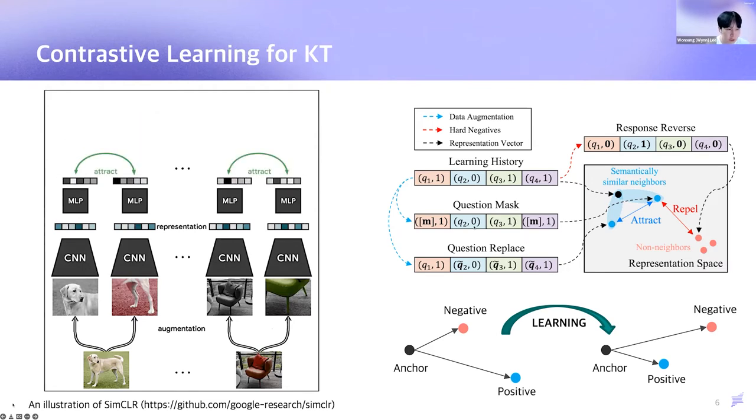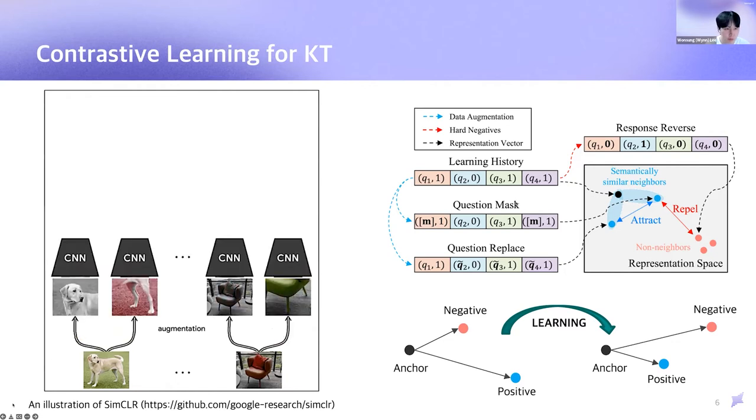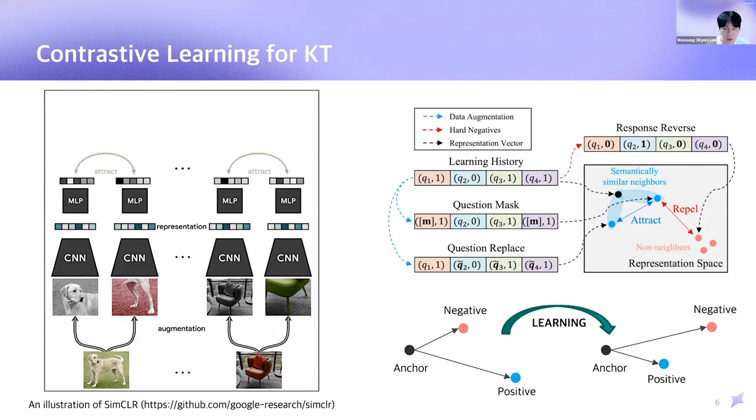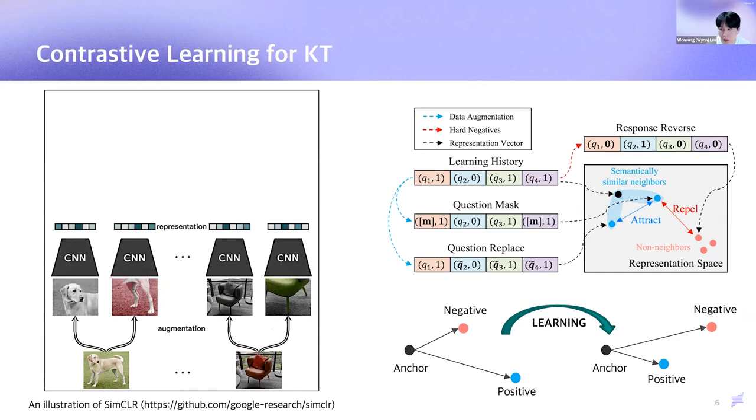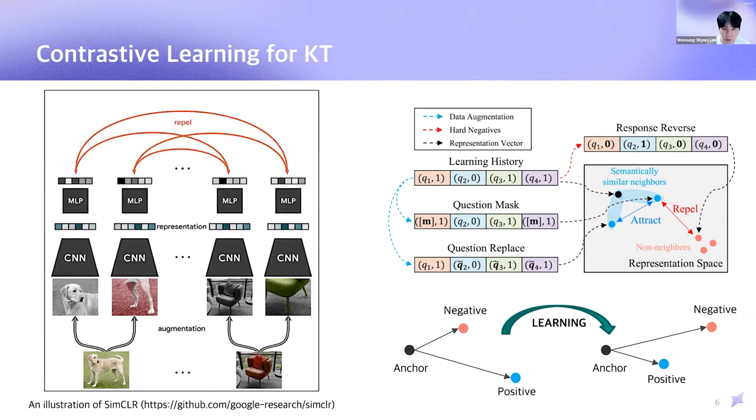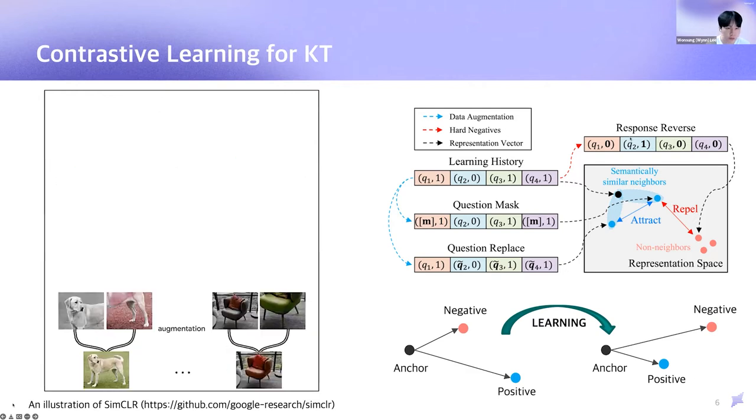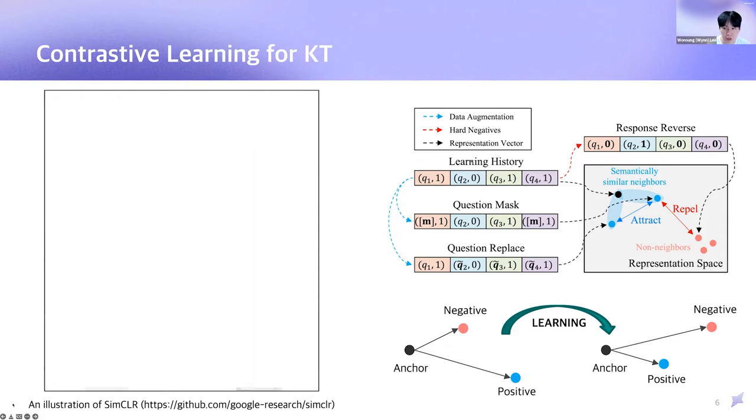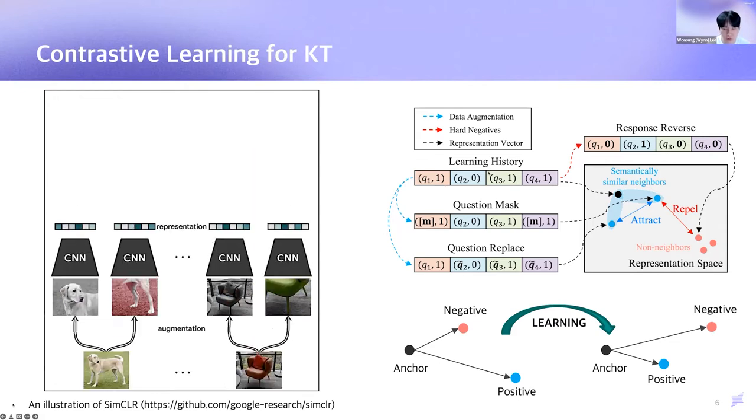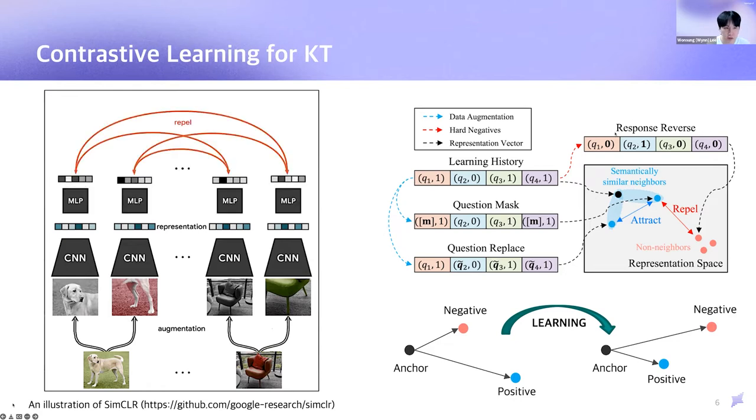So this becomes a positive example. In contrast, when we reverse responses 0 to 1 or 1 to 0, this augmentation leads to semantically different learning histories. For example, if we reverse all response variables as shown here, the student proficiency represented by the changed learning history can be totally different from the original one. Long story short, we make use of those examples as hard negatives to further improve the performance of contrastive learning.